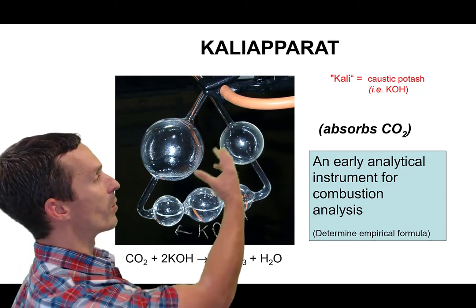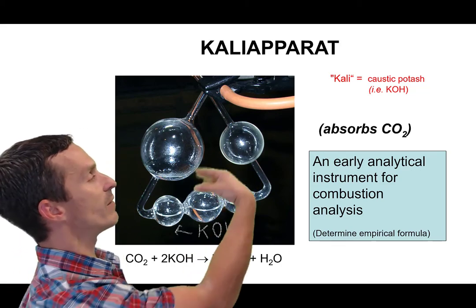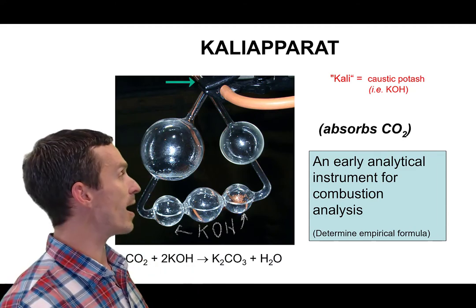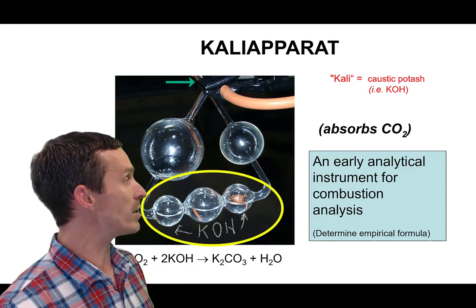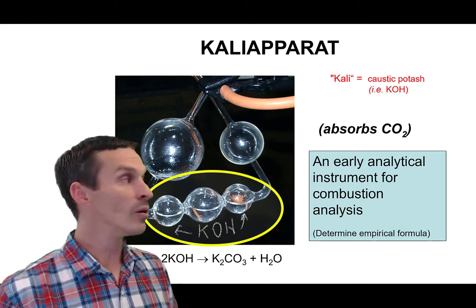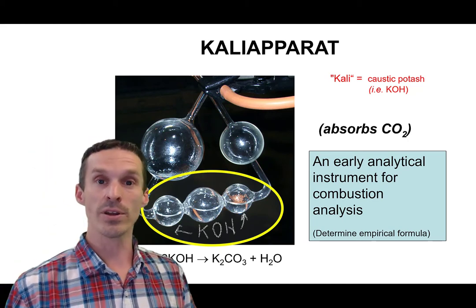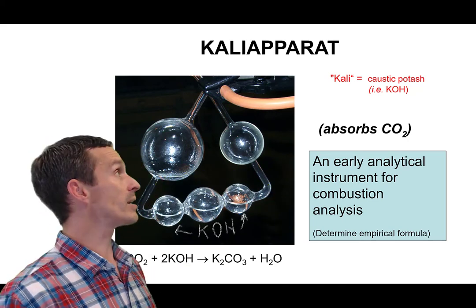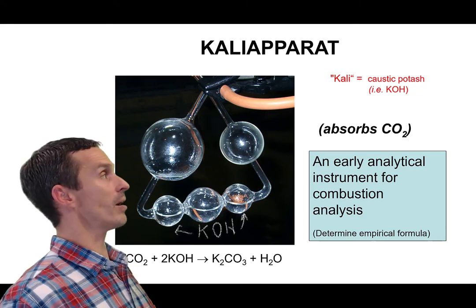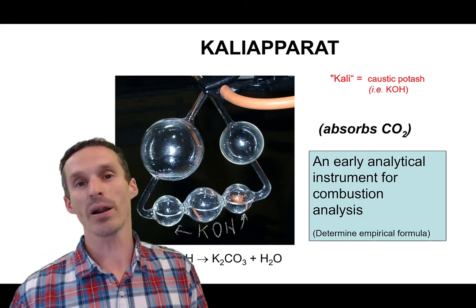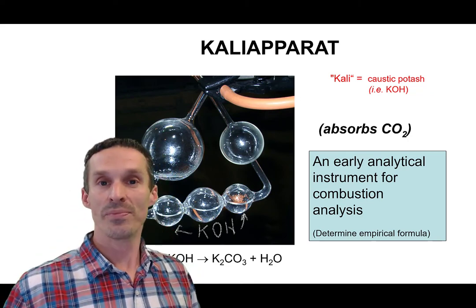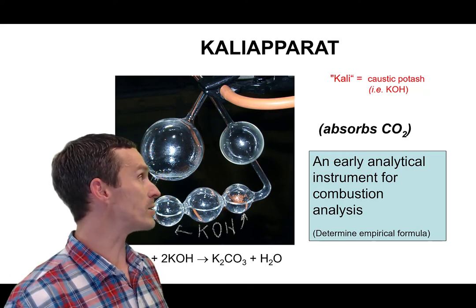And that's what the device over here is for. So after we're burning our compound, the fumes basically flow through this bubble. And then you can see that they'd be captured in the base because that KOH, potassium hydroxide, will react with the CO2 to produce potassium carbonate. And that's actually where the term Kaliaparat comes from because Kali refers to potash, caustic. So it's all kind of in the name of the chemicals that we're using.